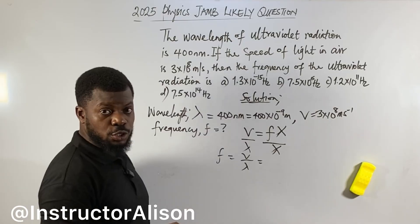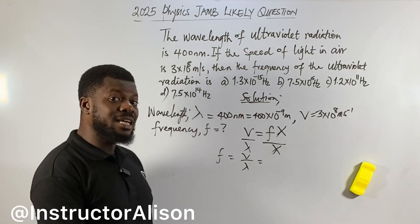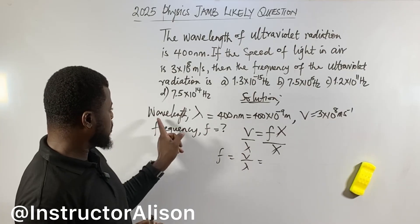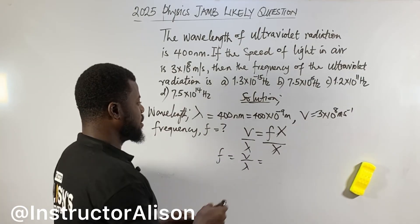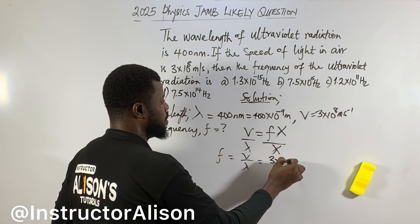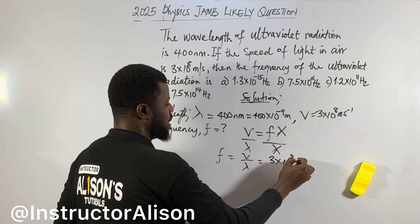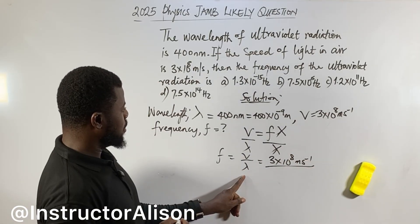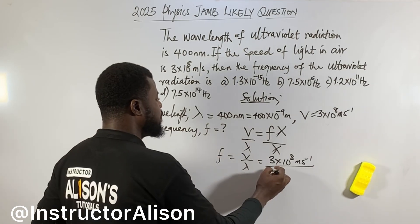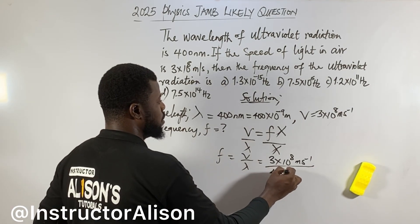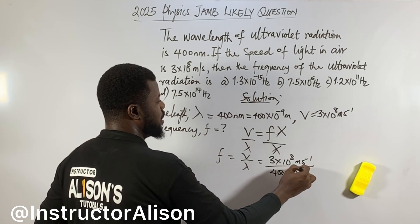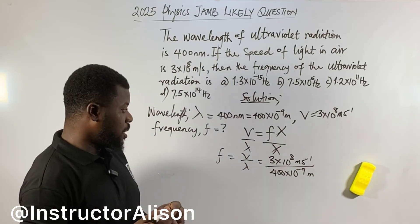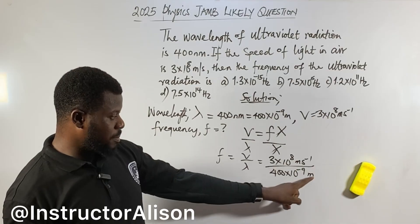Voilà, frequency equals v divided by lambda. Now v — they gave us — is 3 times 10 to the power of 8 meters per second, divided by the wavelength, which is 400 times 10 to the power of negative 9 meters. As you can see, meters and meters will cancel.